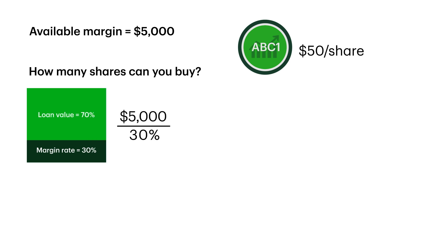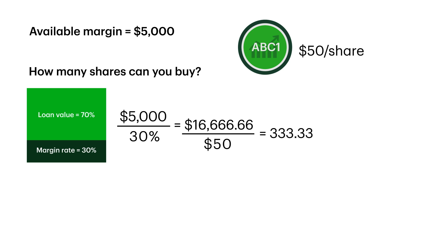First, $5,000 divided by 30% means that your buying power is $16,666 for any 30% marginable stock. Dividing this number by $50 a share equals 333.333. Since you can't buy a fraction of a share, this means you can buy a maximum of 333 shares.